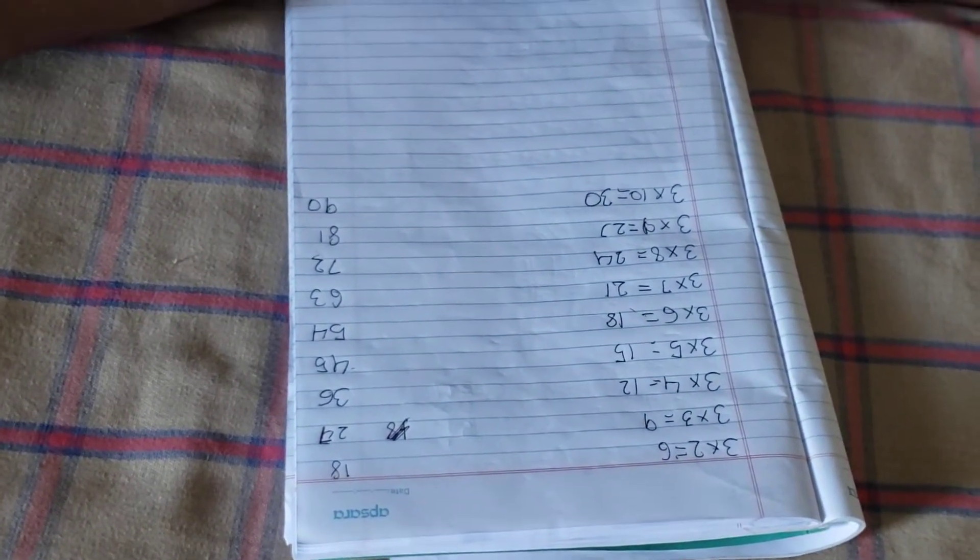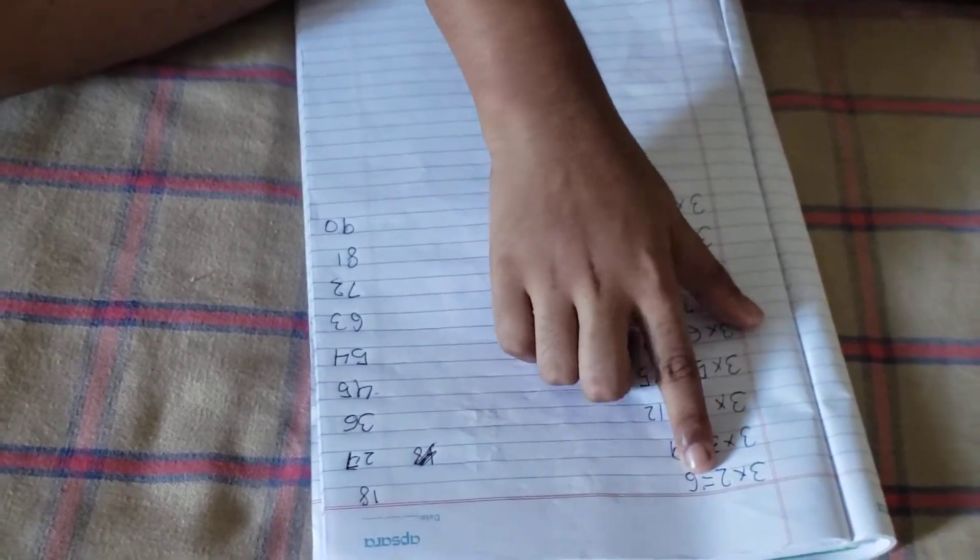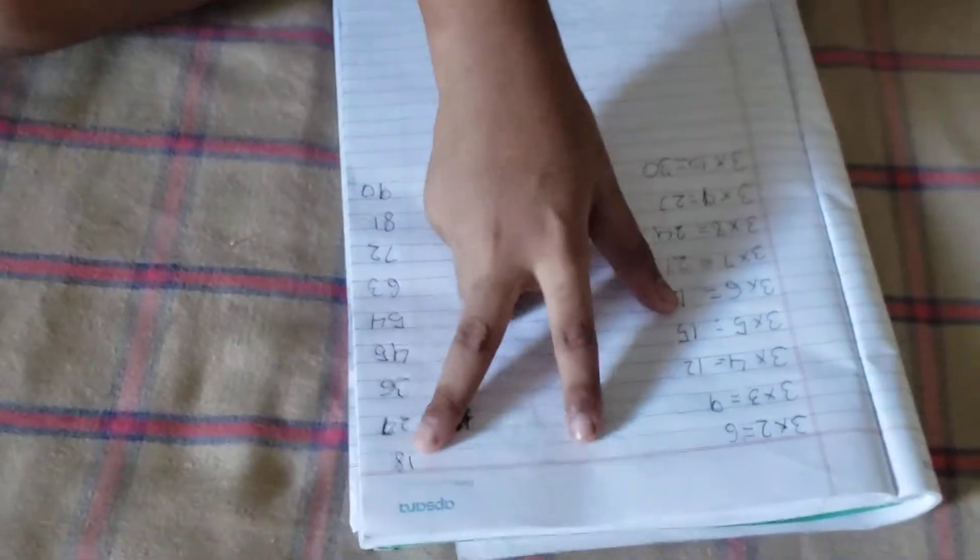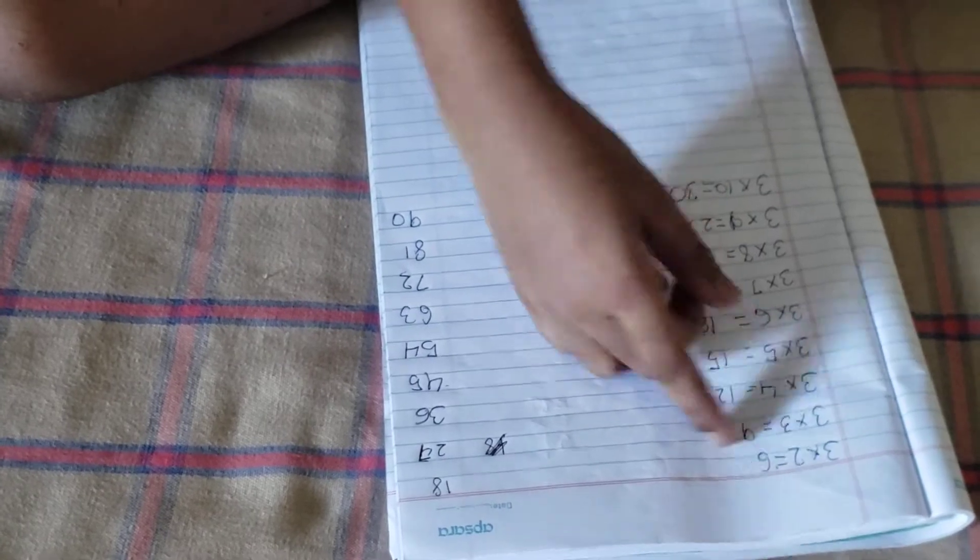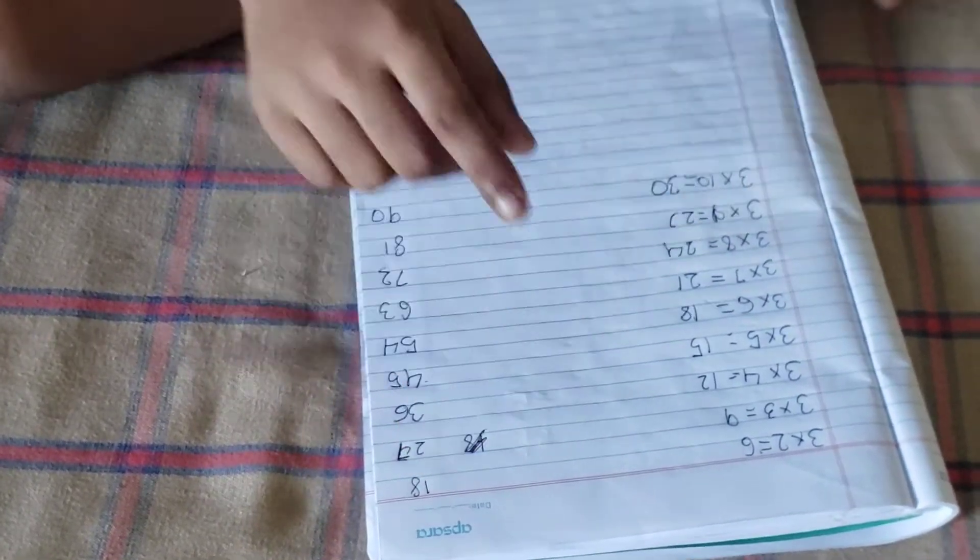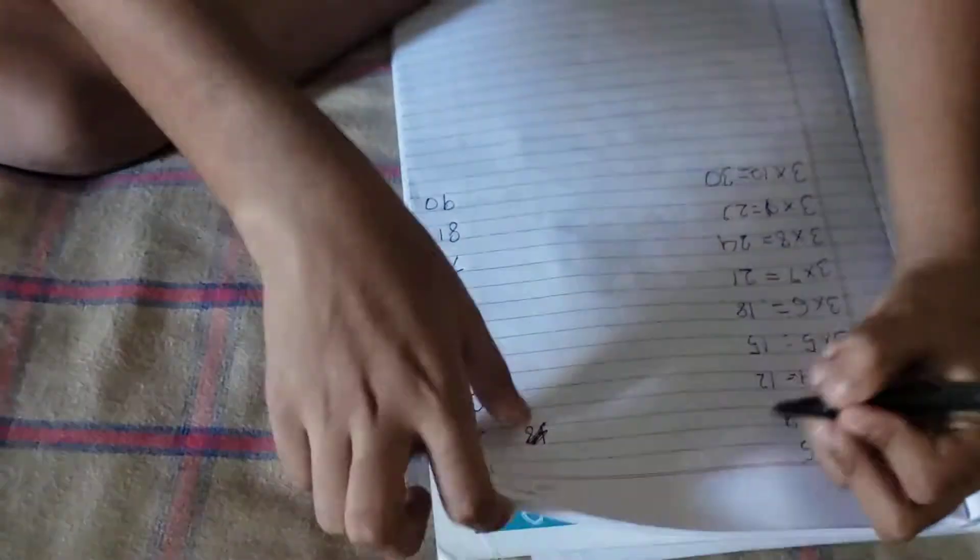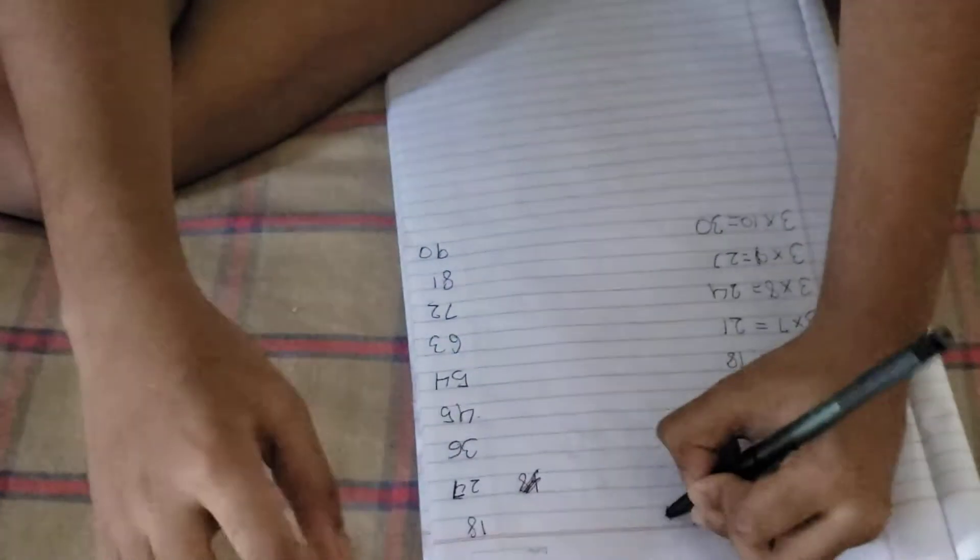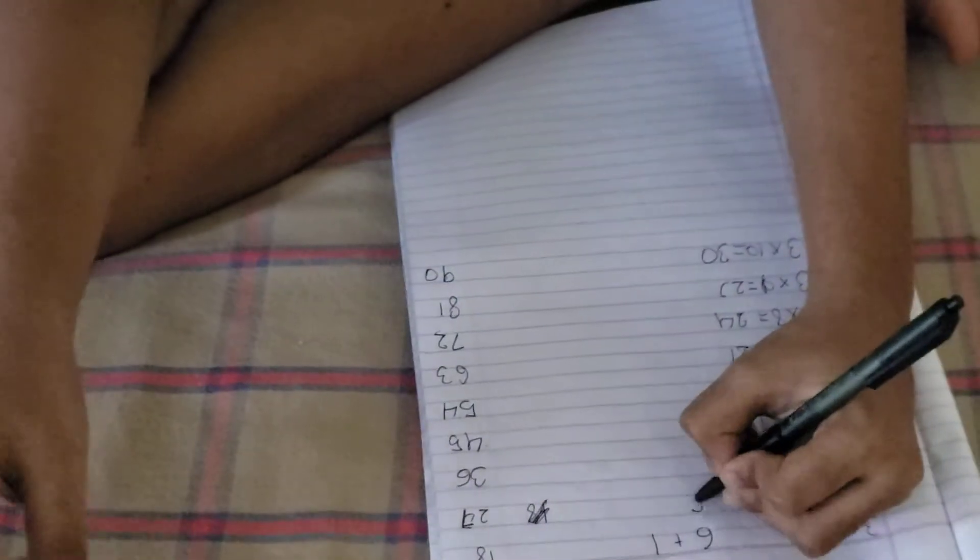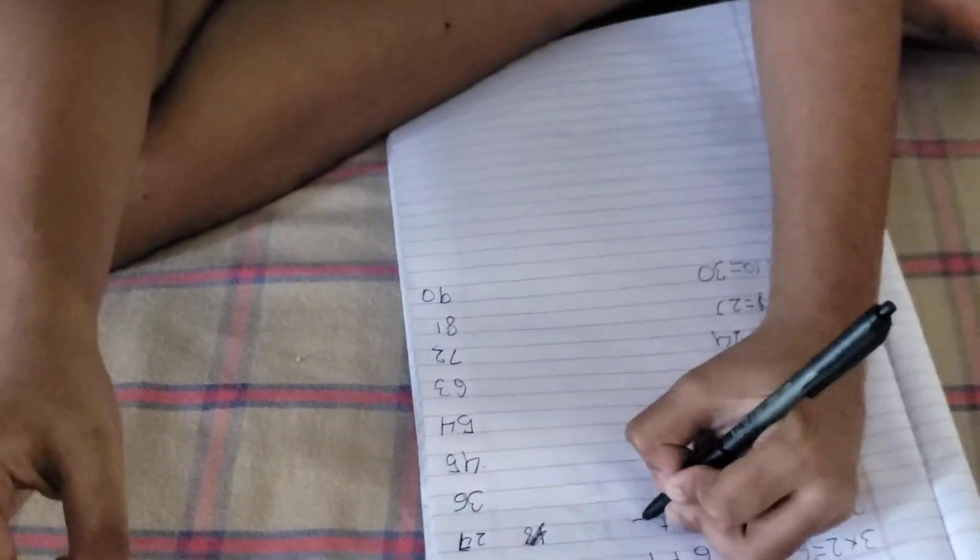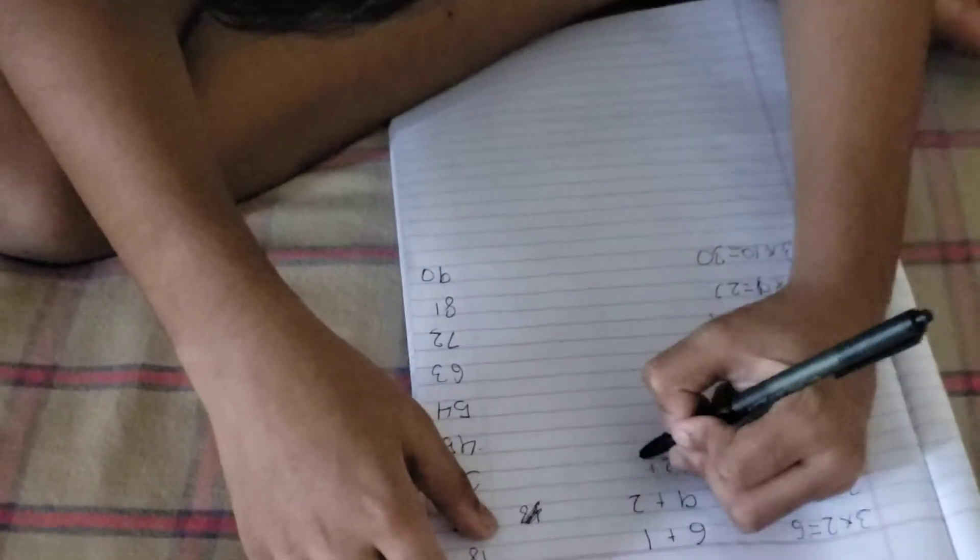So the next is 18. So can you see this? So we need to write 6 plus 1. Because with the answer of 3 table and the answer of 9 table's first digit, we should add it. So 6 plus 1. Because 1 is here. 9 plus 2.